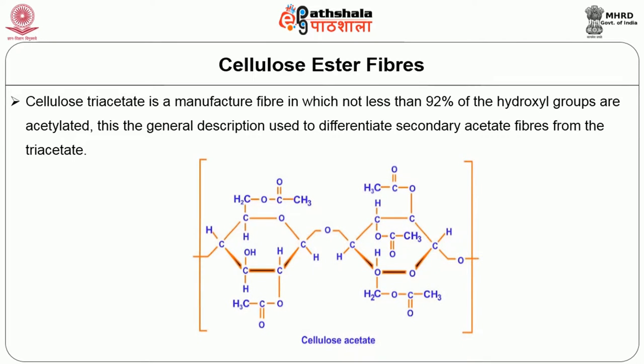Cellulose acetate is a manufactured fiber in which not less than 92 percent of the hydroxyl groups are acetylated. Cellulose triacetate is a manufactured fiber in which not less than 92 percent of the hydroxyl groups are acetylated. This is the general description used to differentiate secondary acetate fibers from the triacetate fibers.